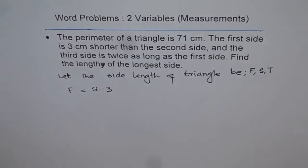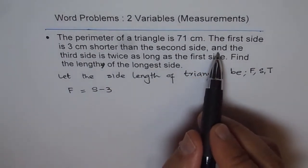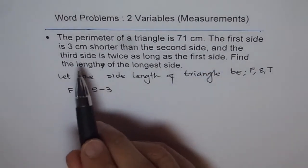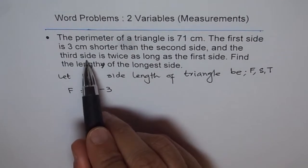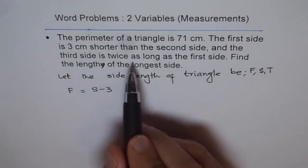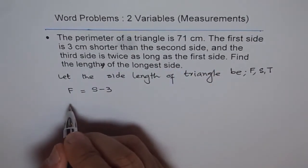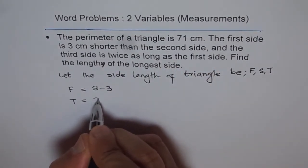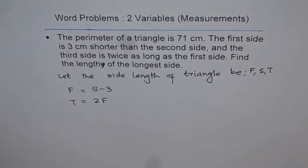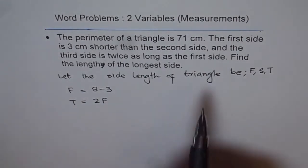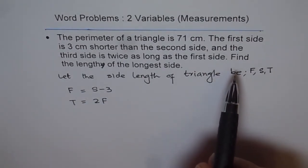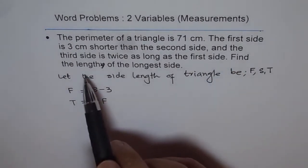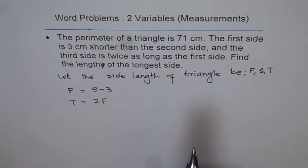And the third side is twice as long as the first side, so T equals 2 times F. Our goal is to find the length of the longest side.